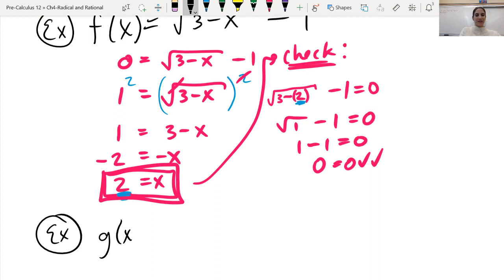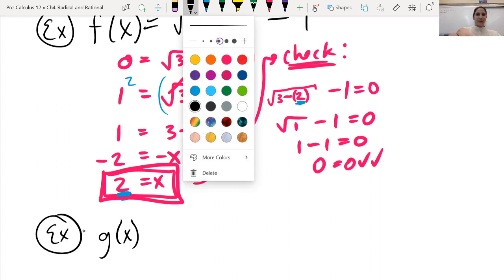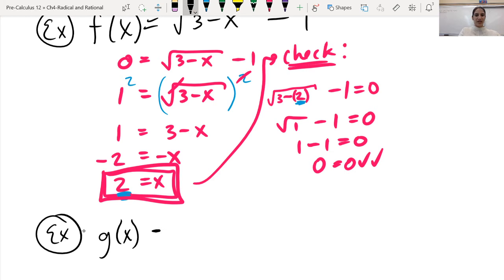We have g(x), make that a bit thicker, g(x) equals root x plus 12 minus x.